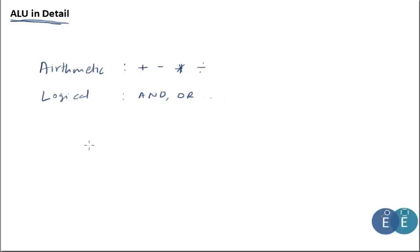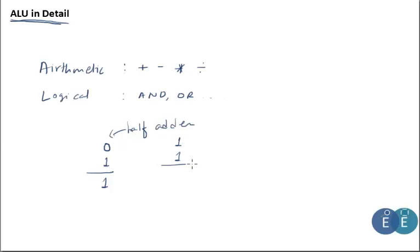Starting with a simple binary addition: adding bits 0 and 1 gives sum 1 with no carry. Adding 1 and 1 gives sum 0 with carry 1. Adding just two bits can be done with a half adder. When we have more than one bit, we need a three-input device — a full adder.